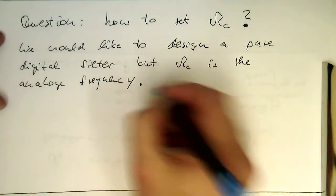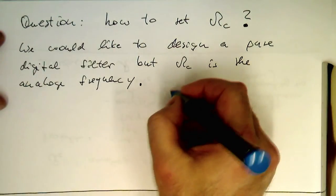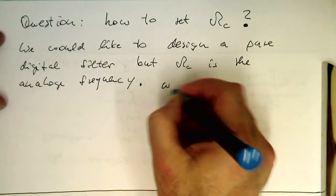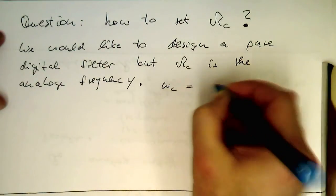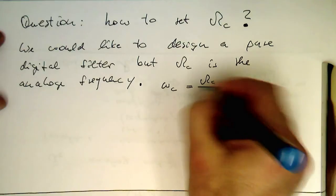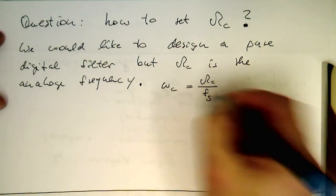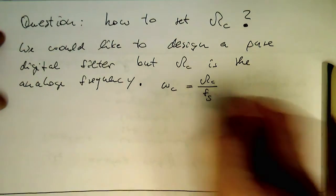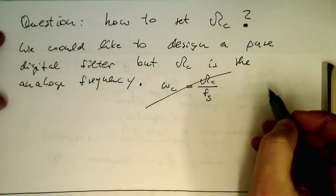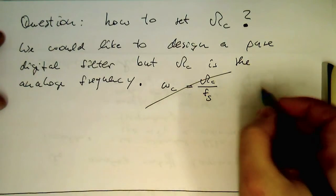So the problem is we cannot just create our omega c with omega c divided by fs, because this is not possible here. That's obviously a problem.